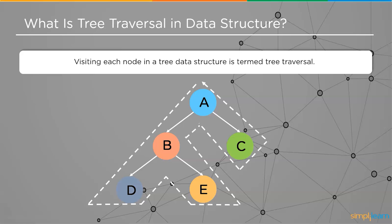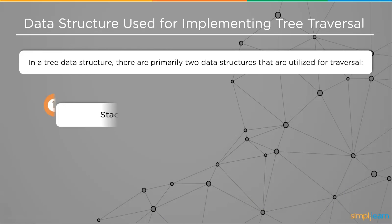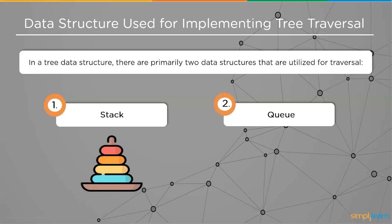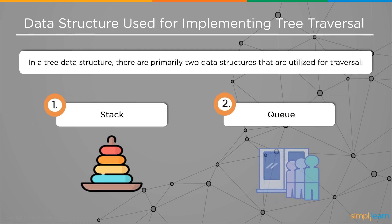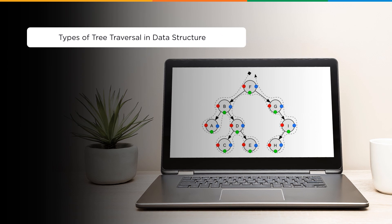The data structure used for tree traversal: there are primarily two data structures utilized — the stack and the queue. A stack is a linear data structure that operates on the Last In First Out (LIFO) principle, with only a top pointer used for insertion and deletion. A queue, unlike a stack, is open on both ends — one end for input and the other for deletion — following the First In First Out (FIFO) principle.